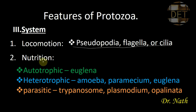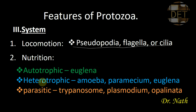Another feature is nutrition. Protozoa exhibit all modes of nutrition. Some are autotrophic, meaning they can synthesize their own food from simple inorganic substances — a typical example is Euglena. Some are heterotrophic, meaning they depend on already-prepared food and cannot synthesize their own food — examples include Amoeba, Paramecium, and Euglena.